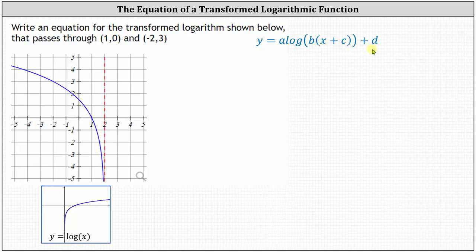It's important to be familiar with the graph of the basic common log function shown below — its general shape and the vertical asymptote at x equals zero. Before we begin, let's review how the values of a, b, c, and d affect the graph of the basic common log function.